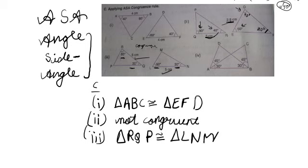This sequence might not be the same as in the book because there are multiple sequences in which we can write the answer. Not just RQP — you can say PQR as well, reversing it. In that case, the sequence of the other triangle LNM will also be reversed. Keep this in mind: if you change the name of one triangle, the name of the other triangle must also change accordingly. You cannot let LNM stay as LNM if you reverse RQP — that would be a wrong sequence.